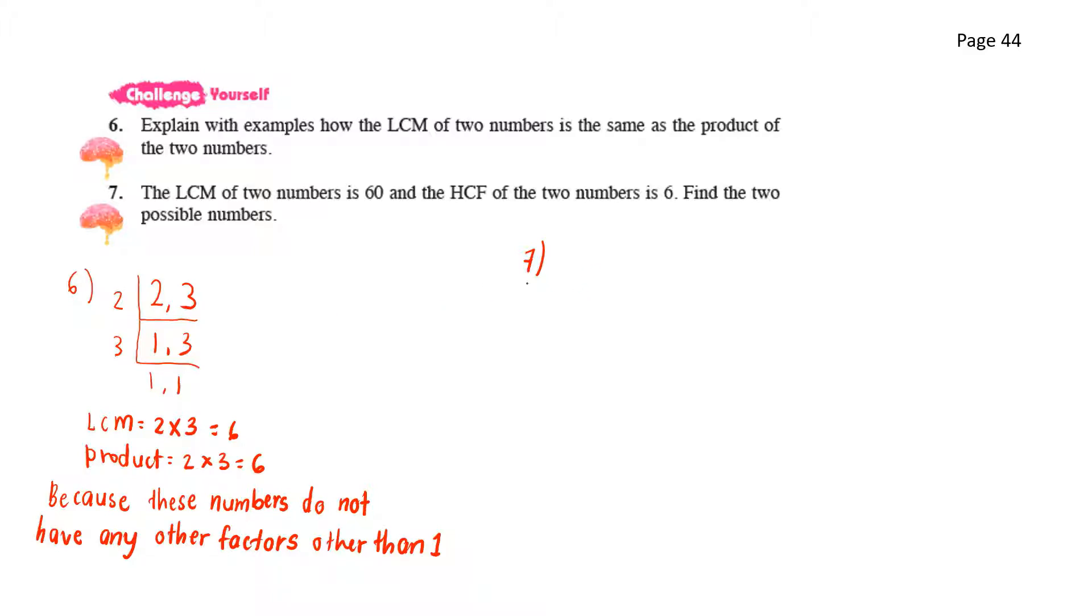Next for number 7, the LCM of two numbers is 60 and the HCF of the two numbers is 6. Find the two possible numbers. So here we know the formula is LCM is actually the product of the two numbers over the HCF. So the LCM here is 60. We do not know the product so we'll put it as A and B over the HCF which is 6. So here we have A and B at 360. So the possibilities here could be 60 and 6 or 30 and 12 or you could find other possibilities or multiplications that could give us 360 and those are all possible numbers.